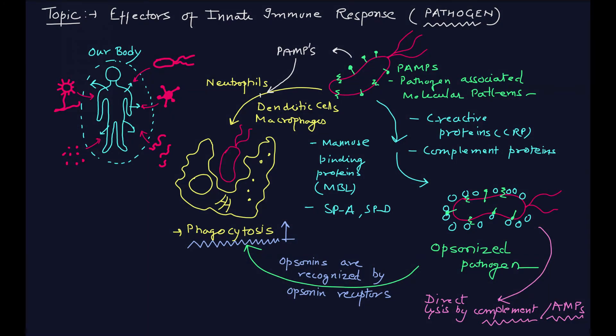This is the whole layout of the innate immune response: how our phagocytes — neutrophils, dendritic cells, and macrophages — phagocytize the pathogen by recognizing PAMPs (pathogen-associated molecular patterns). Then you have proteins — C-reactive protein, complement proteins, mannose-binding proteins, and the SP-A and SP-D proteins — that cause opsonization, leading to an increase in phagocytosis. In this video we discussed phagocytosis, opsonization, and the important proteins such as C-reactive proteins, complement proteins, and mannose-binding proteins.